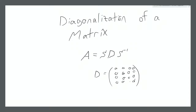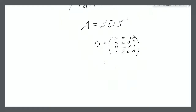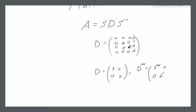We want to find some matrix D and another matrix S such that A equals S times D times S inverse. So what's the benefit of that? If we have a diagonal matrix — say D equals [[3, 0],[0, 2]] — and we do D to the power of 100, well, that's just going to be [[3^100, 0],[0, 2^100]]. It's very easy to raise a diagonal matrix to an exponent.